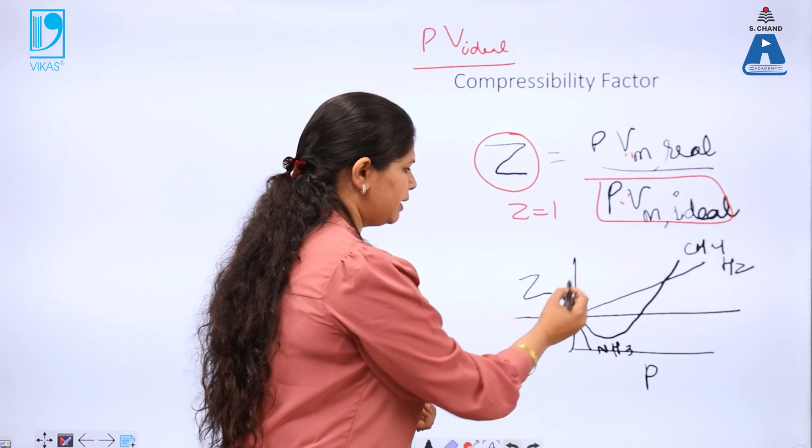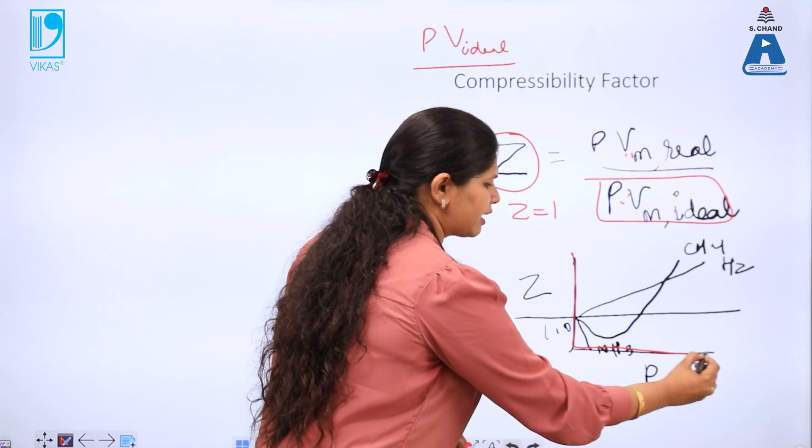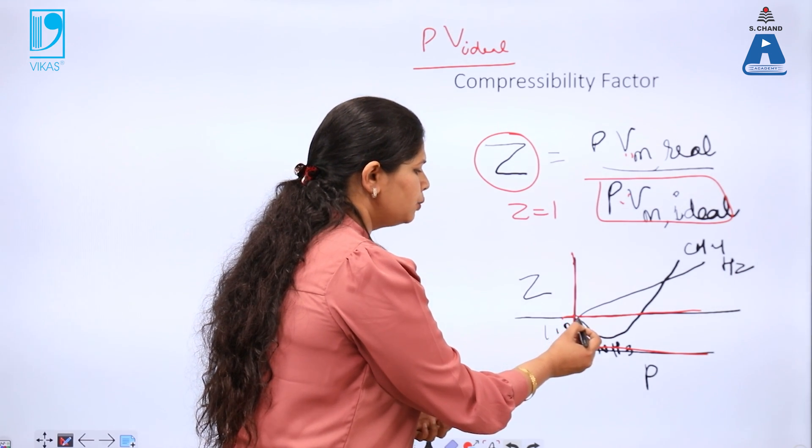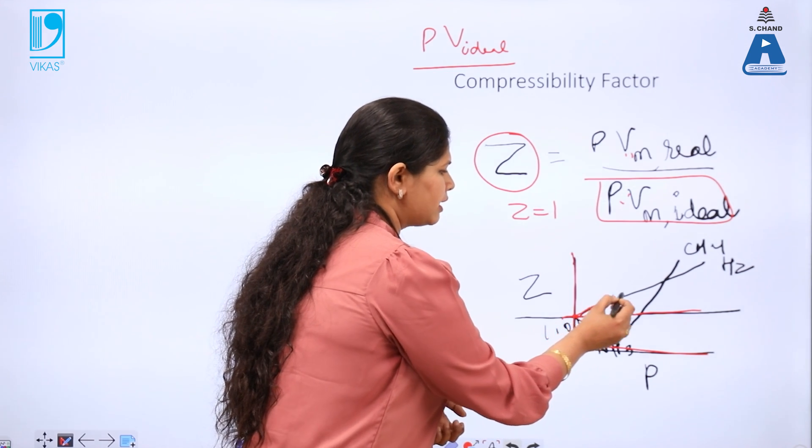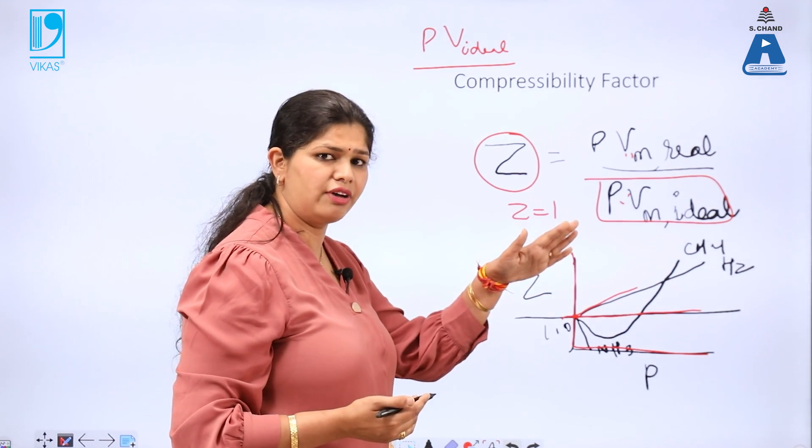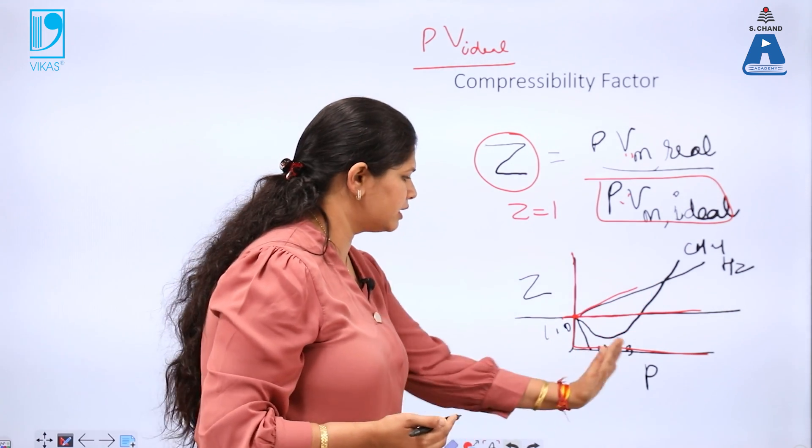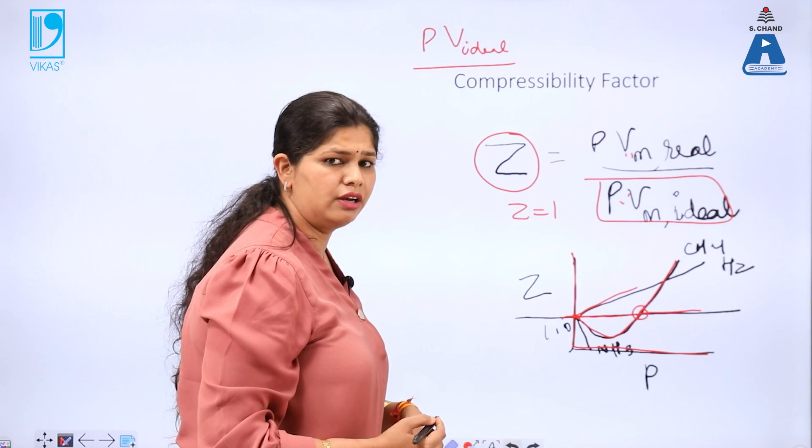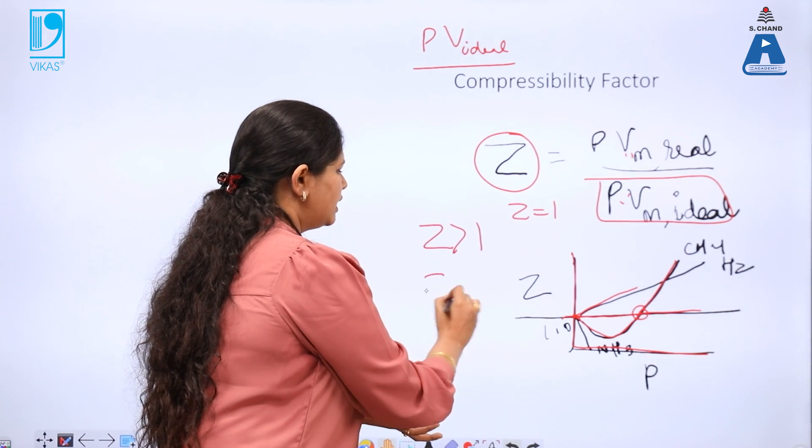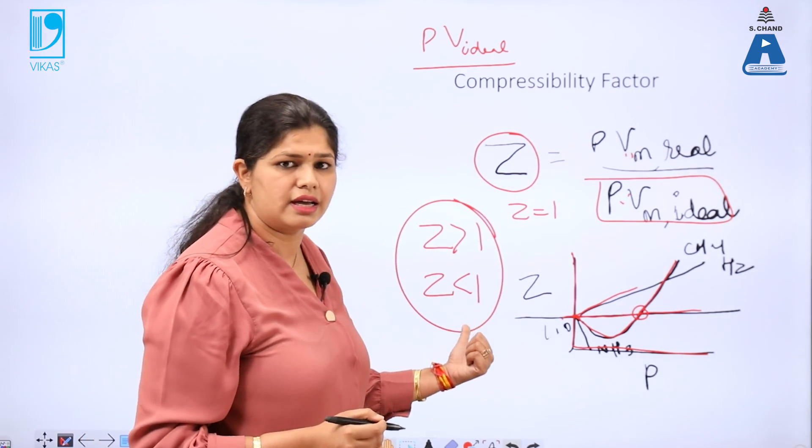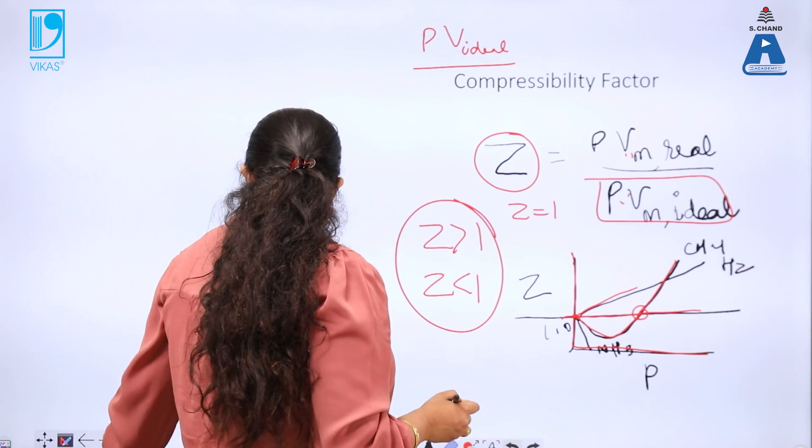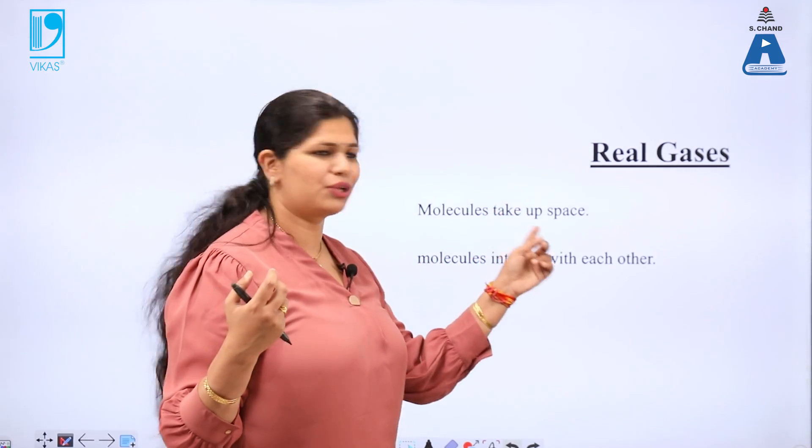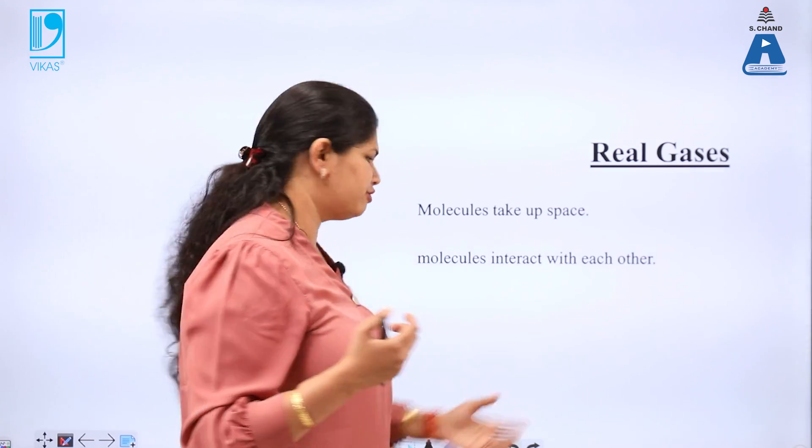But it is found that experimentally, if you plot a graph of compressibility factor versus pressure, all the gases do not follow this trend. Either some gases like hydrogen or helium, they have Z greater than 1, some gases have Z less than 1 and then at certain pressure, they cross this ideal gas line and then they have Z greater than 1. Z greater than 1, Z less than 1 lead to the conclusion that real gases are existing in the system and to explain the real gas behavior, we have to address two problems: that the molecules occupy space, and the molecules interact with one another.